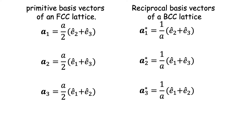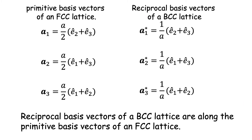Comparing the two: the primitive basis vector for the FCC lattice is (a/2)(e2 + e3), whereas the reciprocal basis vector of the BCC lattice is (1/a)(e2 + e3). The factor e2 + e3 is common, so a1 and a1* are in the same direction — only their lengths differ. The multiplying factor is a/2 for FCC and 1/a for the reciprocal BCC lattice. This means the reciprocal basis vectors of the BCC lattice are along the primitive basis vectors of the FCC lattice.